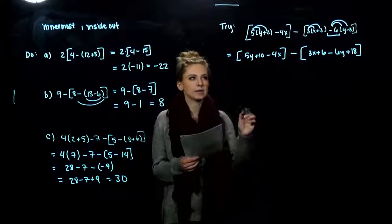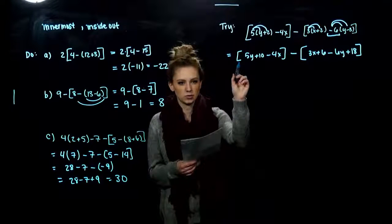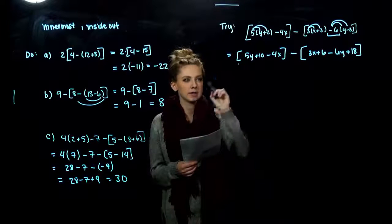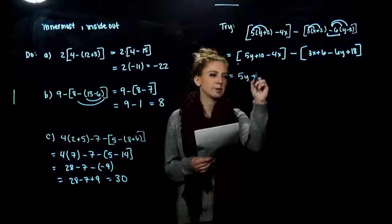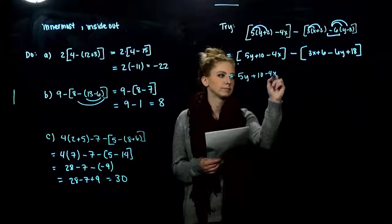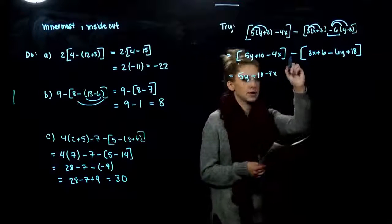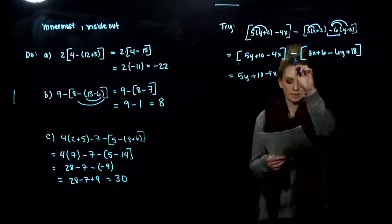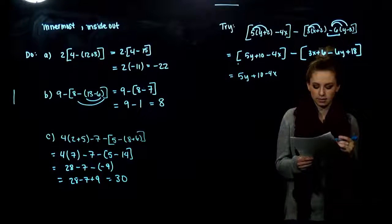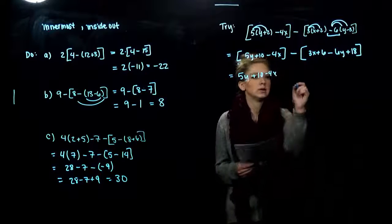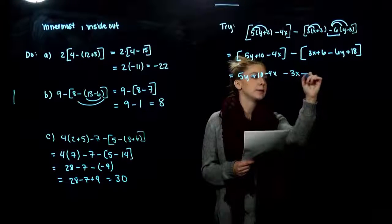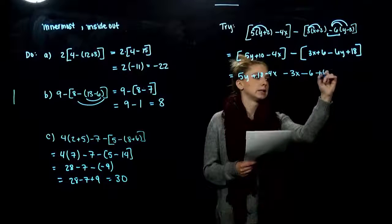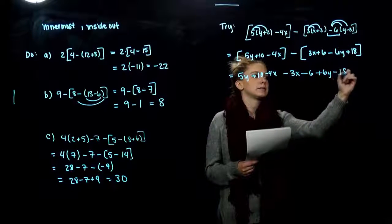And now I need to ask, do these parentheses or these grouping symbols matter in this case? It's just a 1 on the front, so no. We can drop those. But over here doesn't matter. Yeah, because I need to distribute that negative into everything if I'm going to get rid of the parentheses. So minus 3x as I distribute. Minus 6 plus 6y minus 18.